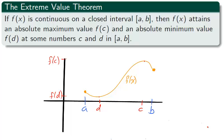The extreme value theorem says that a function f on a closed interval [a,b] attains an absolute maximum f(c) and an absolute minimum f(d), for some numbers c and d between a and b.